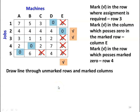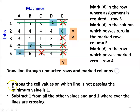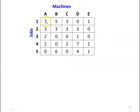Draw lines through unmarked rows and the marked column. Unmarked rows are 1, 4, 5. Among the cell values on which no line passes, the minimum value is 1. Subtract 1 from all uncovered cell values and add 1 wherever a line crosses. The new table values are: 7, 3, 2, 0, 0; 5, 3, 0, 0, 6; 3, 3, 0, 2, 0; 0, 3, 1, 7, 4; 1, 0, 0, 1, 1.